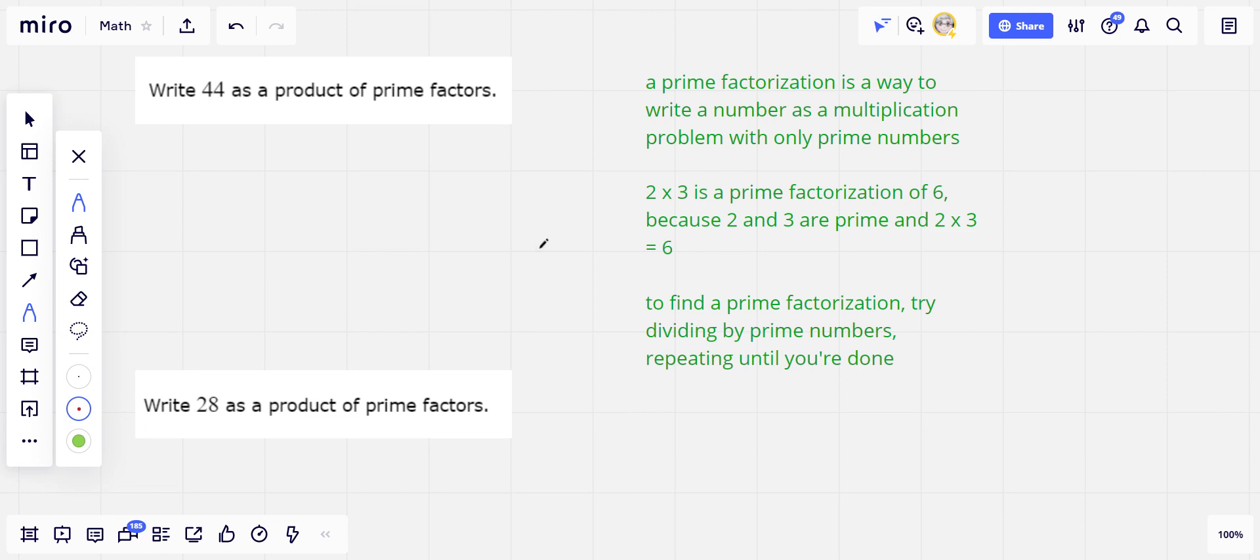Sometimes this is called a prime factorization. So instead of writing, let's say, the number 10, you would write 2 times 5.